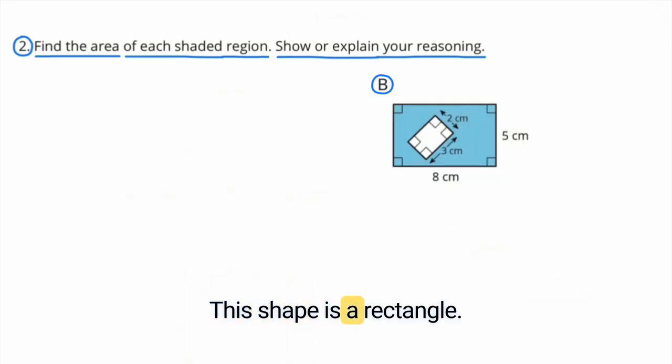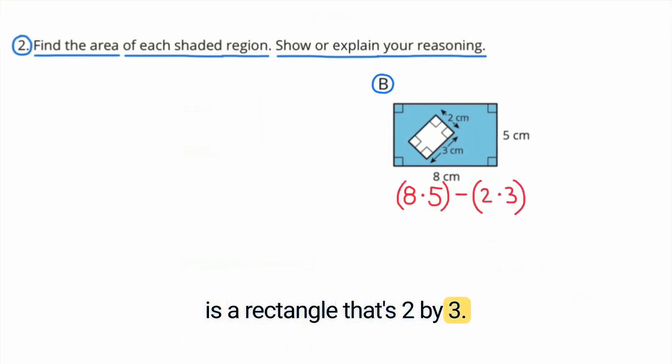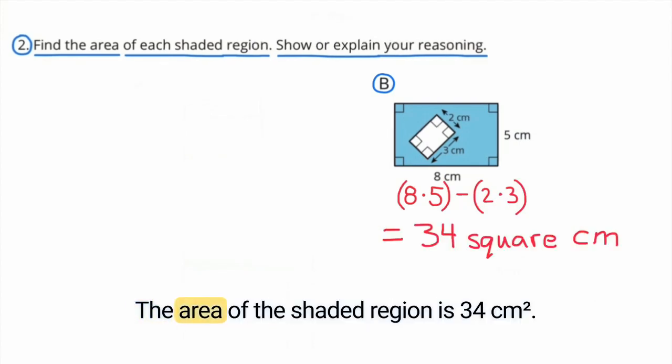B. This shape is a rectangle that's 8 by 5 and cut out of the middle of it is a rectangle that's 2 by 3. 8 times 5 minus 2 times 3. The area of the shaded region is 34 square centimeters.